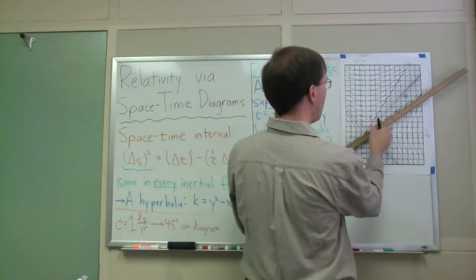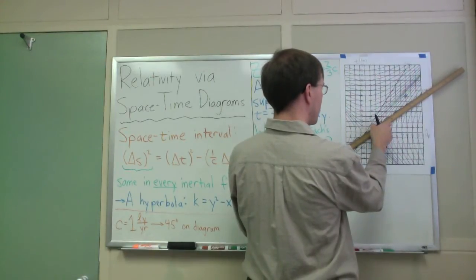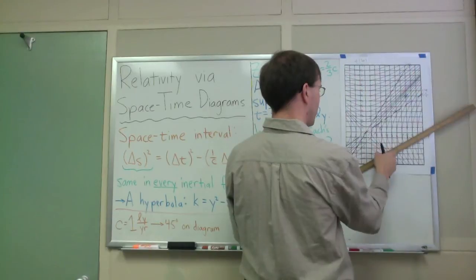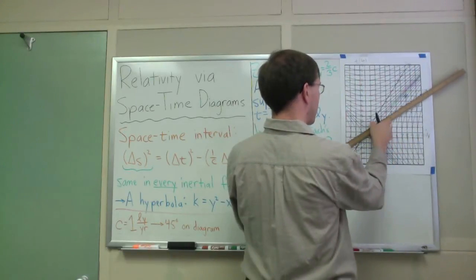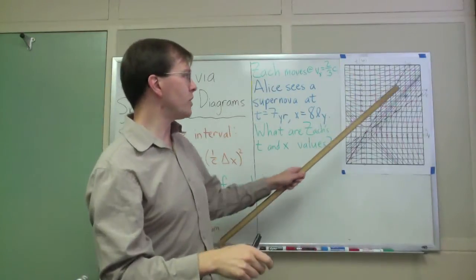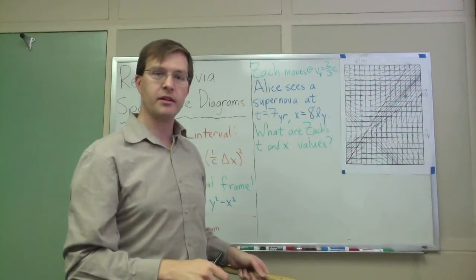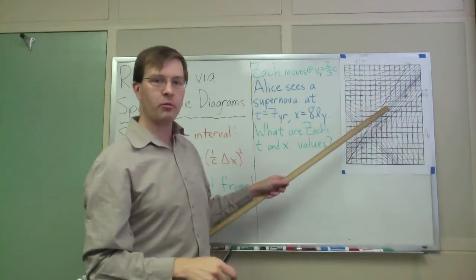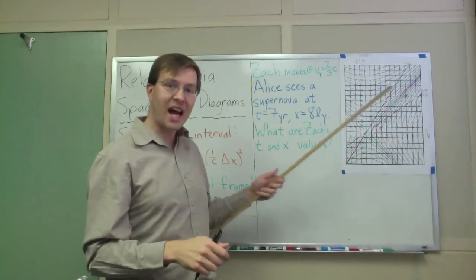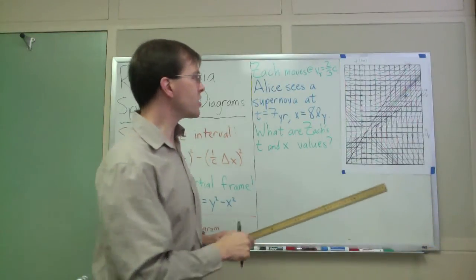So, I know that if these events are simultaneous for Zach, so are these, so are these, so are these, and so are these, and so are these. In particular, if I can draw a line that goes at this slope that goes right through the supernova's event, that will tell me what time slice for Zach that supernova took place on. So, let me do that.